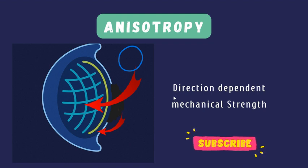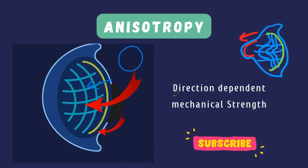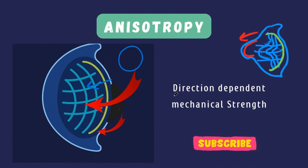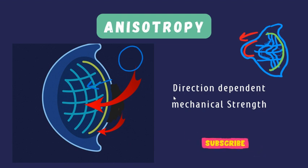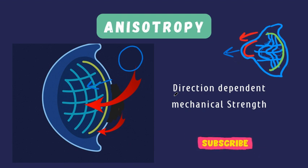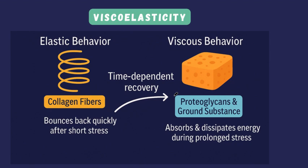In ectasia, there is a disruption of this normal anisotropic pattern due to loss of organized collagen alignment. This reduces the cornea's ability to resist stress in certain directions, making the area where collagen arrangement is lost more susceptible to localized deformation and progressive bulging.